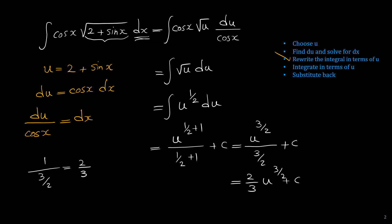As the last step, we substitute back, writing u in terms of x. Since u was 2 + sin x, our final answer is 2 over 3 times (2 + sin x) all to the power of 3 over 2 plus c.